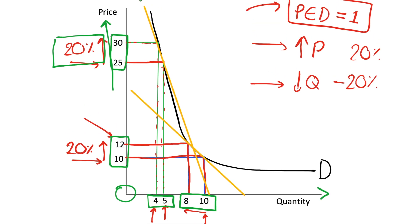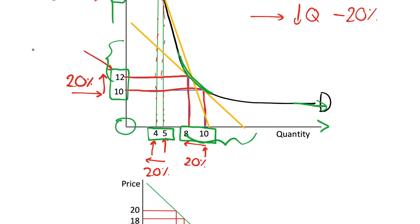This is why, if we want to keep a constant elasticity, our demand curve has to be very steep as price moves towards infinity, and very flat as quantity moves towards infinity, with a sharp curve in the middle. So that's why for a constant elasticity it has to be a curved demand curve — because we're looking at percentage changes, and that's the reason for it.